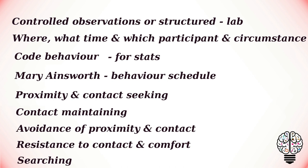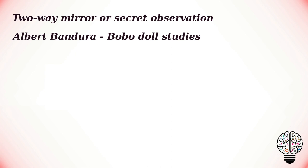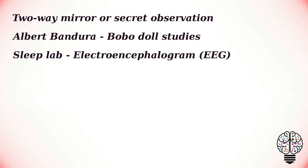The observer noted the behavior displayed during 15-second intervals and scored the behavior for intensity on a scale of 1 to 7. Sometimes behavior is observed through a two-way mirror or secretly observed. This method was used by Albert Bandura in his study of aggression in children in the Bobo doll studies. A lot of research has also been carried out in sleep laboratories, where electrodes are attached to the scalp of participants and changes in electrical activity in the brain during sleep are observed. This machine is called an electroencephalogram, or EEG.